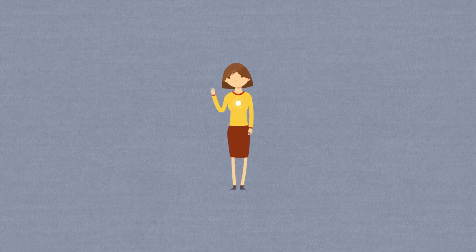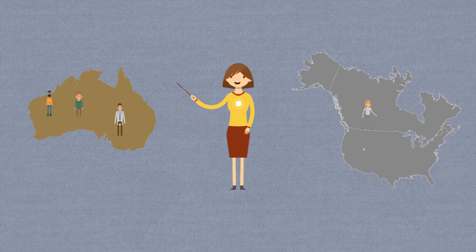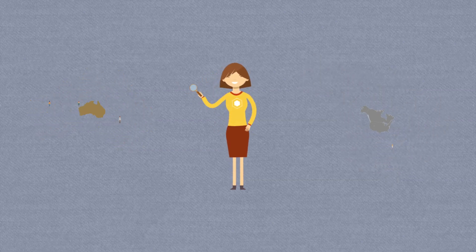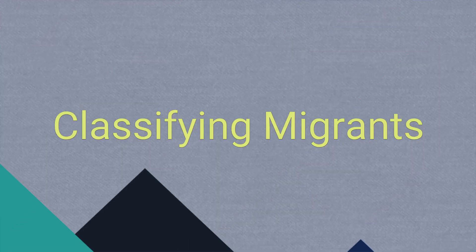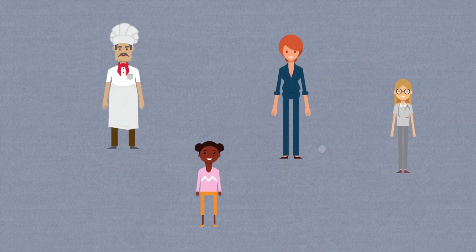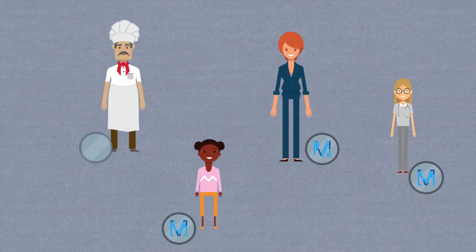In the last explainer video we looked at migrant stocks and flows. Now we need to know who is counted in these statistics — essentially, how are migrants classified? In this video we look at how migrants are classified or defined.